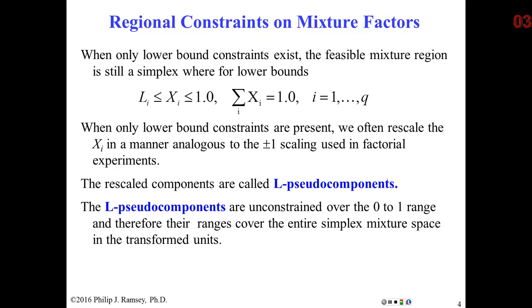So let's start with the simple case. Let's assume I have Q components. And each one of them has a lower bound. So the bound for the i-th component, we'll call it L sub i. And once again, though, the settings of the factors must sum to one.